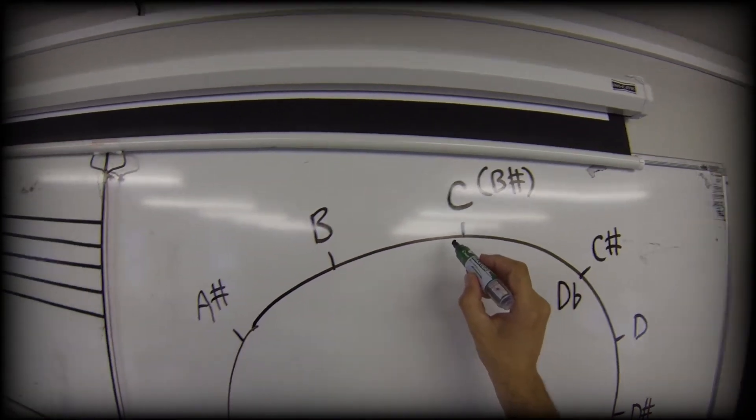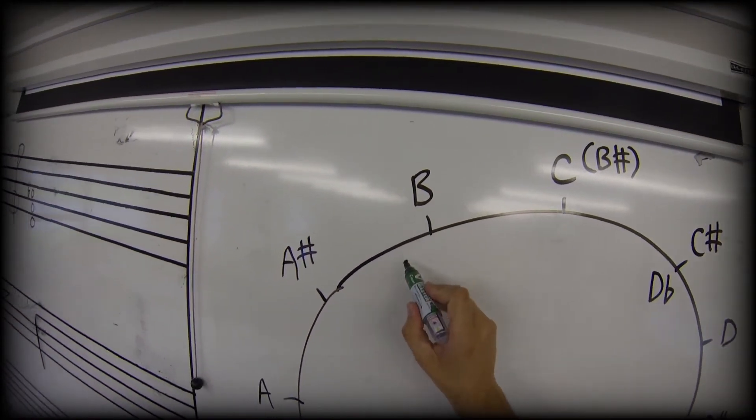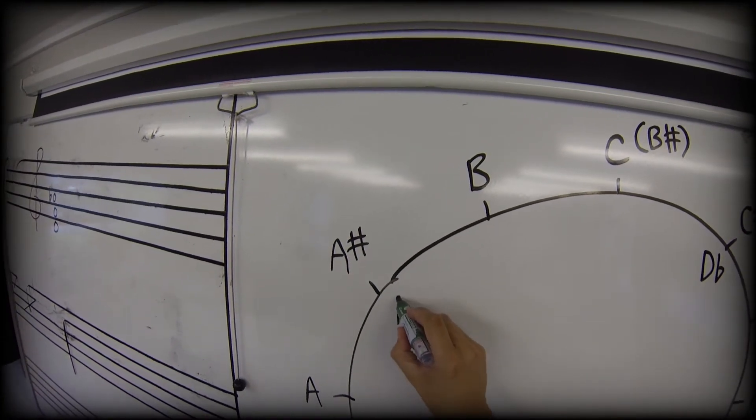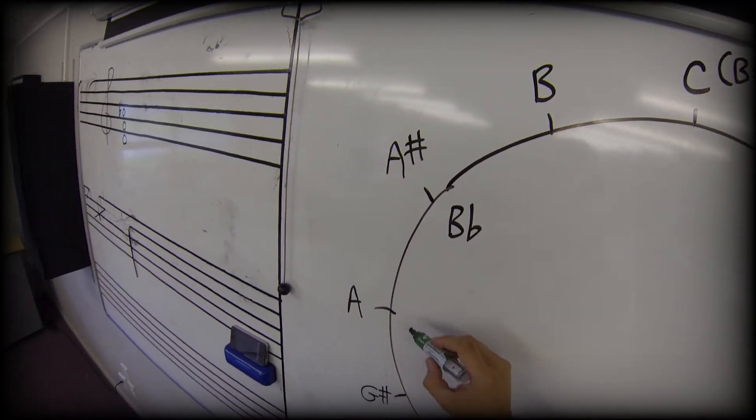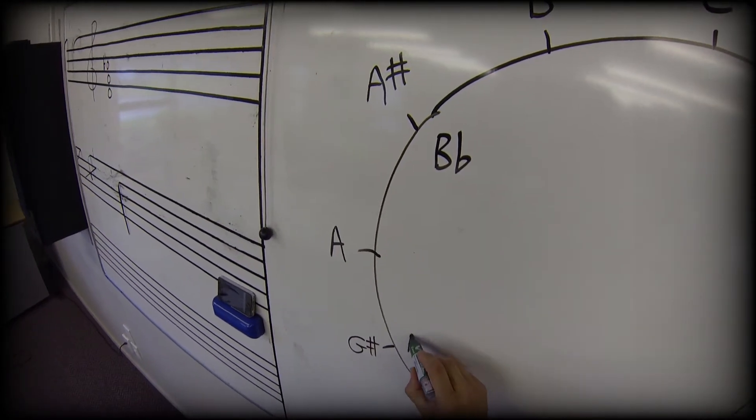Let's go round. I can flatten a B to make B flat. I can flatten an A to make A flat.